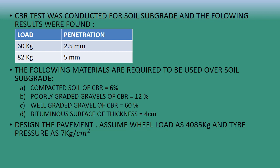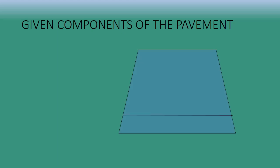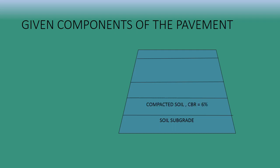To find out the thickness of the pavement, we will first find out the subgrade CBR, then find out the thickness of each layer. The given components are: the soil subgrade sample was given for which we find the CBR value using the penetration load values at 2.5 mm and 5 mm. The compacted soil is above the soil subgrade.